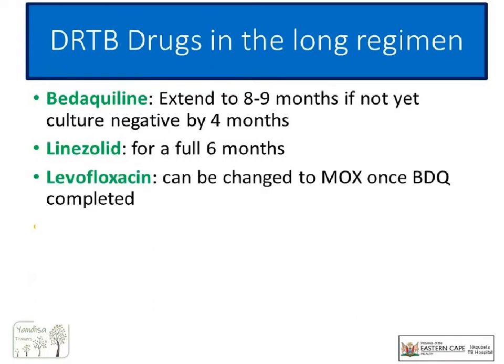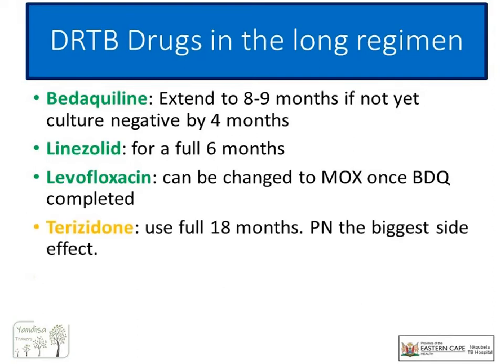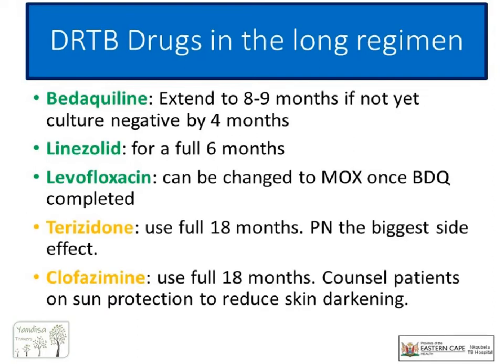Levofloxacin is a key drug in this regimen and is used with bedaquiline — again due to the possible increase in QT interval — and can be changed to moxifloxacin in the continuation phase. Terizidone and clofazimine are both given for the full 18 months. Terizidone's biggest problem is peripheral neuropathy, which is helped by also having the patient on pyridoxine. Clofazimine can give an orange hue in light-skinned patients and darkening of the skin in African patients, which can be unpleasant.